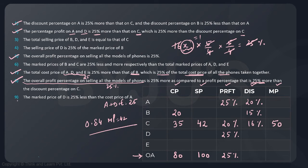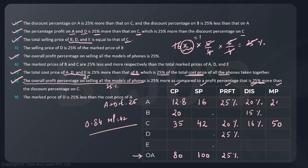Now returning to statement three: the total selling price of B, D and E equals that of C, which is 42. So SP of B + SP of D + SP of E = 42. Total SP of all five = 100, so SP of A = 100 minus 42 minus 42 = 16. With a profit of 25%, cost price of A = 16 ÷ 1.25 = 12.8. With a 20% discount giving SP of 16, marked price of A = 20.